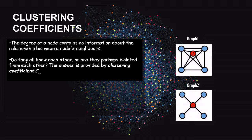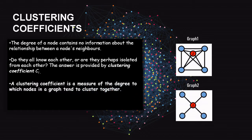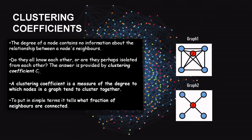To capture that information we turn to clustering coefficient. The formal definition states: the clustering coefficient is a measure of the degree to which nodes in a graph tend to cluster together. In simple words, it tells what fraction of neighbors are connected.